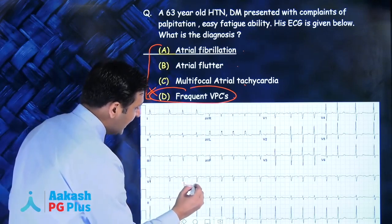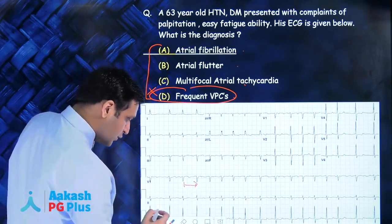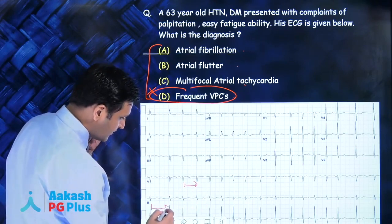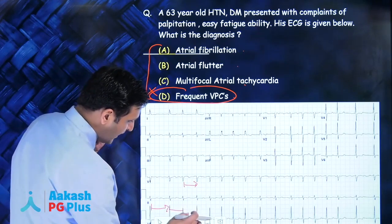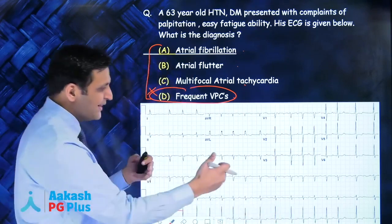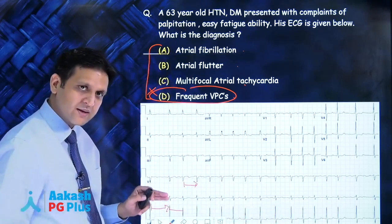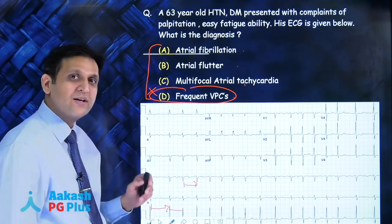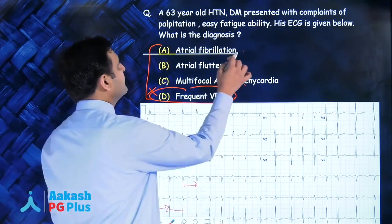Because the RR interval is irregular. If you measure this, you see this is R - narrow, narrow, narrow, narrow, narrow, broad, broad, broad. We have an irregularly irregular RR interval, and the most common cause of irregularly irregular RR interval is atrial fibrillation.